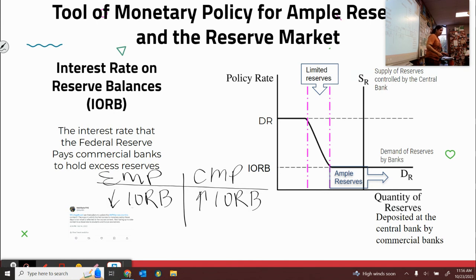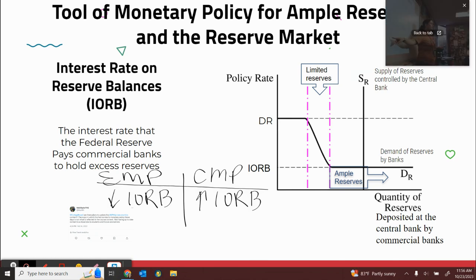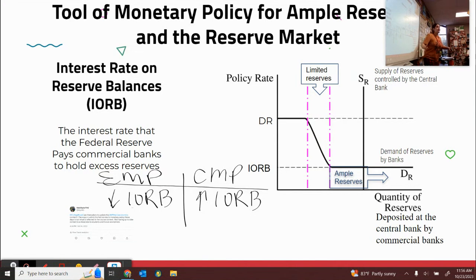So this interest rate is an interest rate that banks earn. And they raise or lower the rate to either incentivize them to save at the Fed or disincentivize them to save. To expand the economy, don't save money with the Fed — loan it out instead. But if I don't want them to loan it out, that's like: don't loan it out, save your money here and earn a high interest rate. So this is an interest rate that they earn.